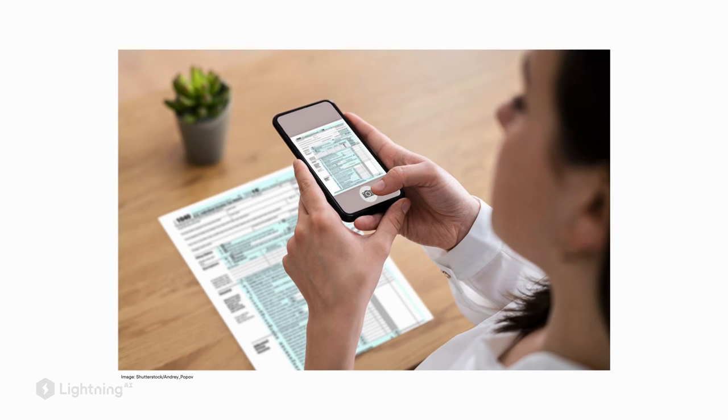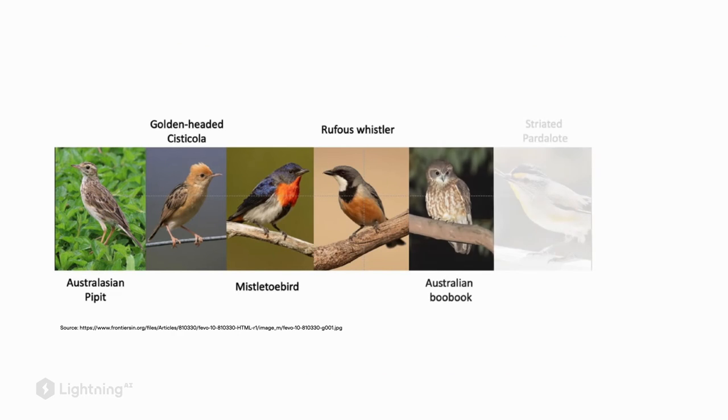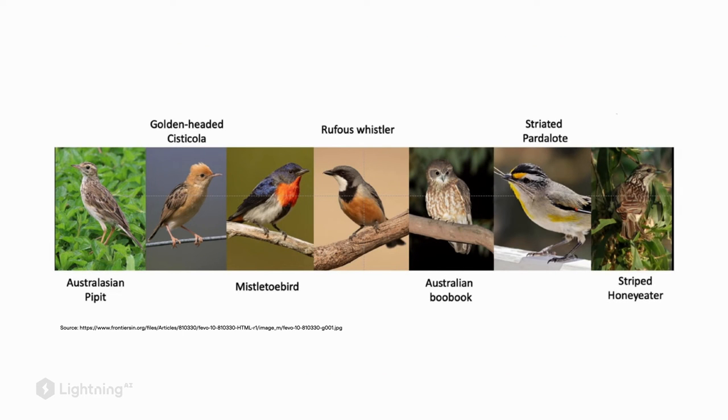Popular examples of convolutional networks are optical character recognition software that you may have already used on your phone, or if you're interested in identifying different birds in your garden, you can implement a bird classifier using a convolutional neural network.